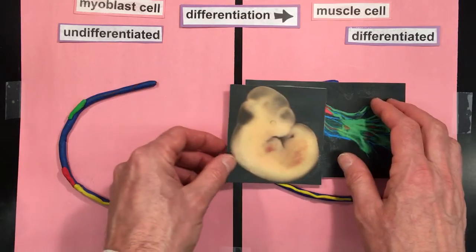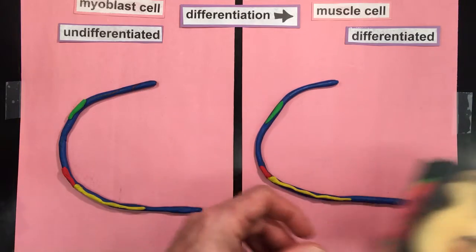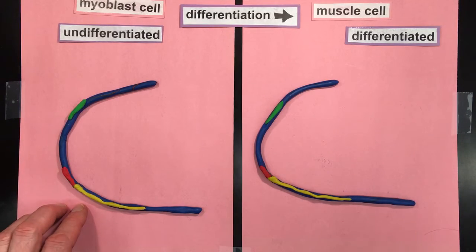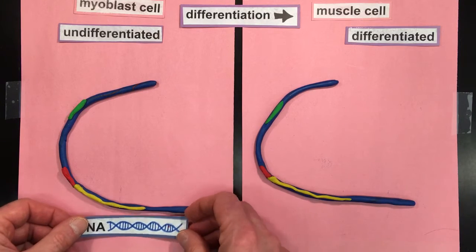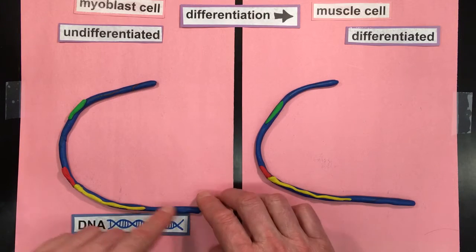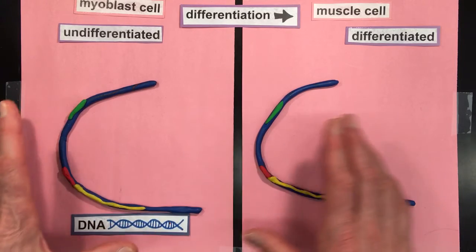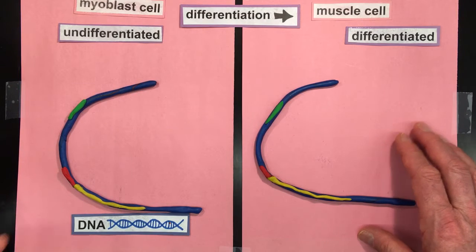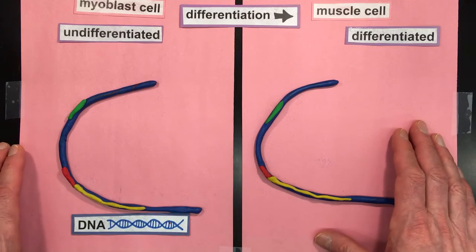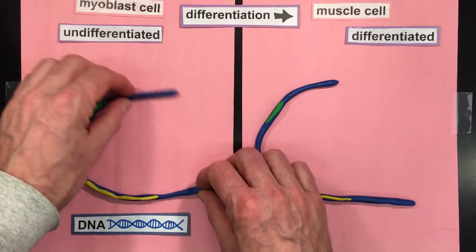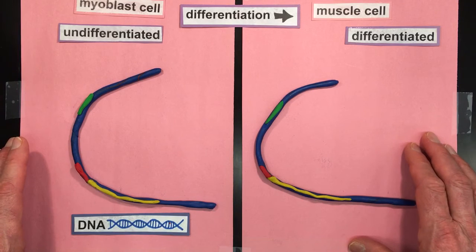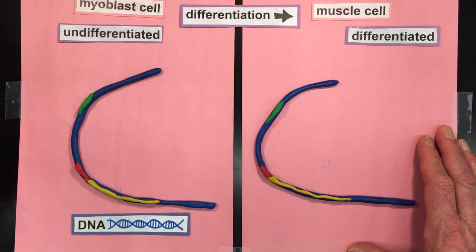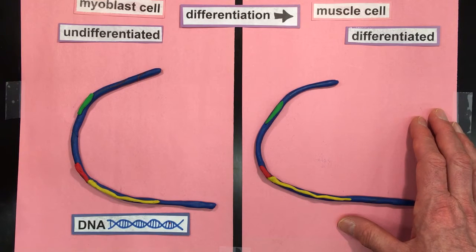Our focus in this video is going to be the DNA in the cells, and the DNA is going to be represented by this blue clay. The blue clay represents the familiar double-stranded DNA helix — a strand of DNA that would be thousands of nucleotide letters long, the A-G-C-T nucleotide letters of DNA. The clay is floppy, and that's true for DNA also. DNA is more like cooked spaghetti than uncooked spaghetti, and that's relevant in the second video. Clay is a good choice for a model of DNA.